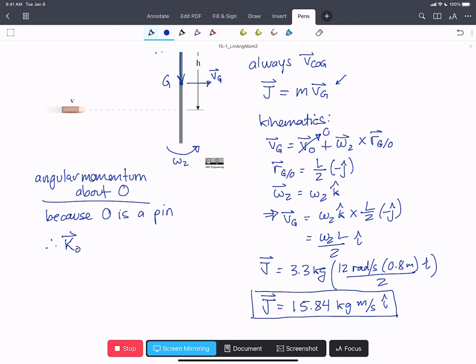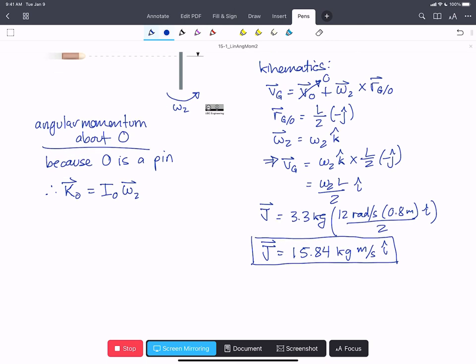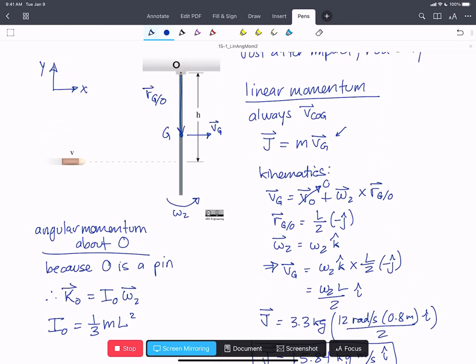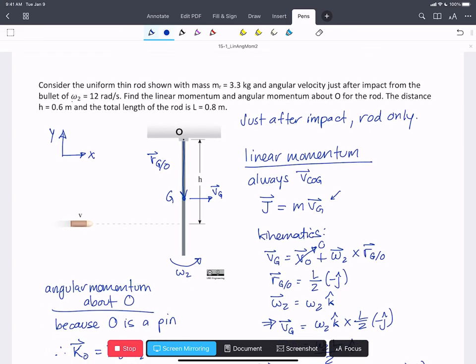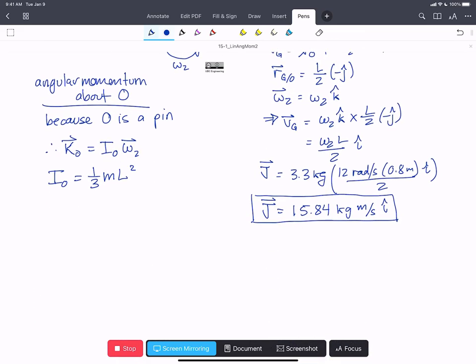The angular momentum K about O is I_O omega 2. So we can say that I_O for a rod from our tables is one-third ML squared, and we've got an expression here for omega 2.